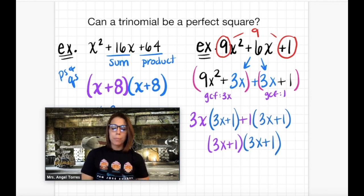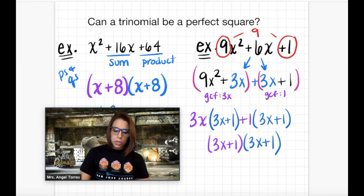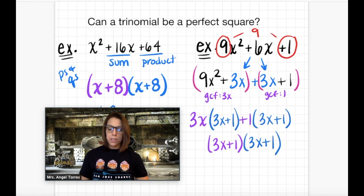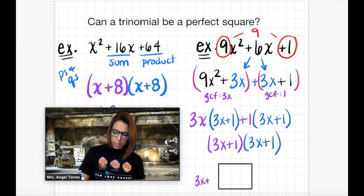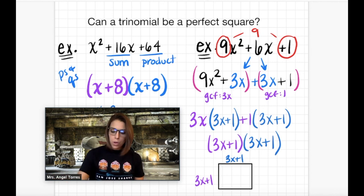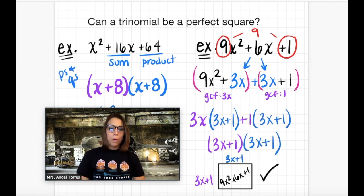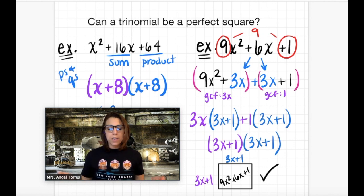Now let's take a look at example 2. I chose super grouping because it has a leading coefficient. The two numbers that have a sum of 6 and a product of 9 are 3 and 3. I grouped those together, factored out the GCF, and ended up with 3x plus 1 and 3x plus 1. Drawing a rectangle and labeling the width as 3x plus 1 and the length as 3x plus 1 — those are exactly the same, which means the trinomial 9x squared plus 6x plus 1 is also a perfect square. So yes, trinomials can be perfect squares. We just need a way to tell from the beginning, and then our factoring would be a lot easier.